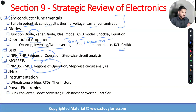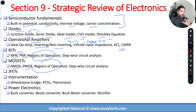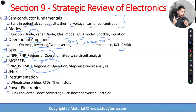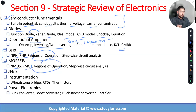Both BJTs and MOSFETs have three states. One is amplification. The second is linear operation, which is basically switch closed. The third is switch open, or cutoff. The saturation region of a MOSFET corresponds to the active region of a BJT. I've done a side-by-side comparison in the on-demand course showing how the base is similar to the gate and so on.